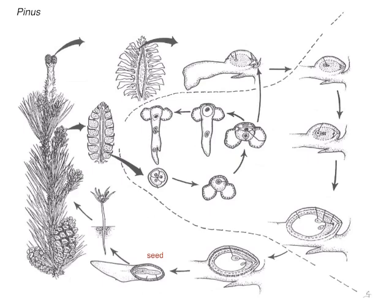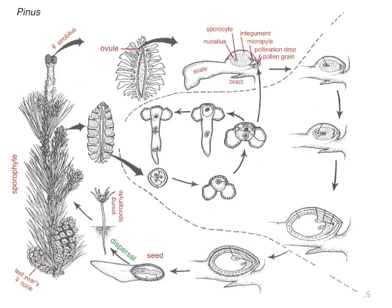Here we have a seed. That seed disperses. It grows up to be a young sporophyte. And then years and years go by and it makes a tree, which is also sporophyte. And it makes female strobili. And on that female strobilus there'll be lots of ovules. If we look at one of those ovules in detail, it's on a scale. That scale is subtended by a bract.